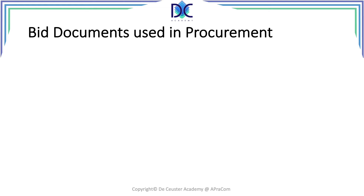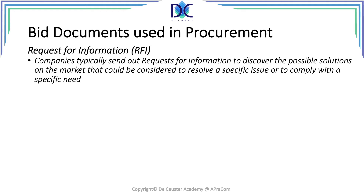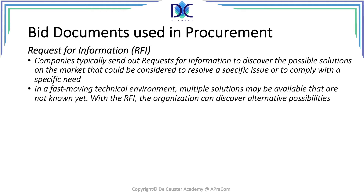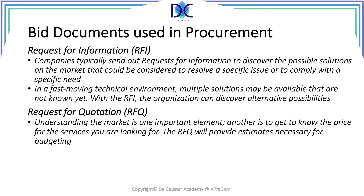We have bid documents and different types of bidding. The first is a request for information (RFI), where you're looking at the market — what is available and what are the possible solutions before you start looking into a final agreement. Then you have a request for quotation (RFQ), where you see what the cost is for the solution that interests you. The RFQ gives you a budget estimate and a more realistic view of what is available and what the costs are.